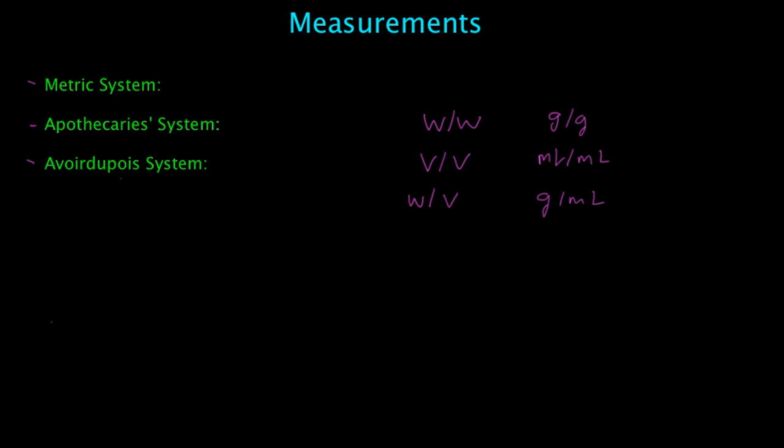So a few of them that are going to be important is you're going to want to know that one pound is equal to 16 ounces, and also one pound is equal to 454 grams.